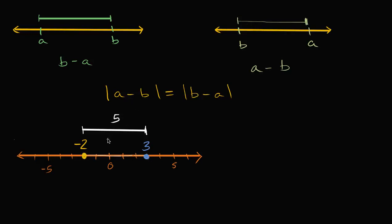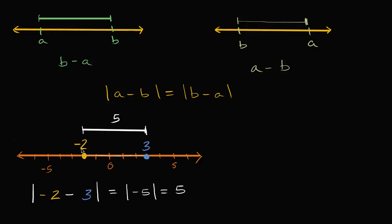Let's see that what I just described actually applies here. If we took negative two to be our A and three to be our B, then we could write this as the absolute value of negative two minus three. What is this going to be equal to? Well, negative two minus three is negative five. So it's the absolute value of negative five, which indeed equals five. So notice, I subtracted the larger number from the smaller number, got a negative value, but then took the absolute value of it. That gave me the actual distance between these two numbers.